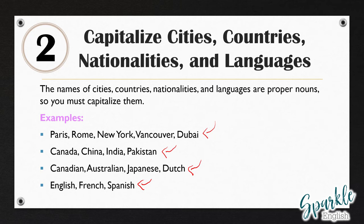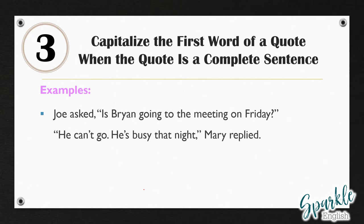Now this one gets a little bit more complicated. We have to capitalize the first word of a quote when the quote is a complete sentence. For example: 'Joe asked,' — you have a comma, quotation marks — 'Is Brian going to the meeting on Friday?' Because this quote is a complete sentence, we have to capitalize the first word of the quote. Another example: 'He can't go. He's busy that night,' Mary replied. Again, we would capitalize 'He' because it's the first word of the quote and this is a full sentence.